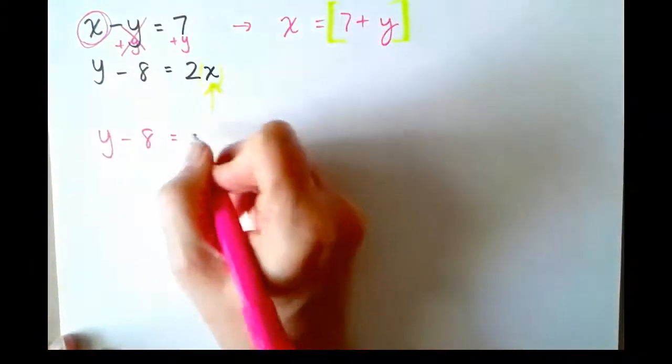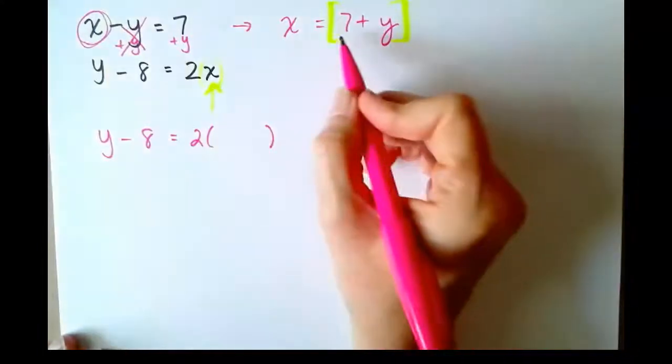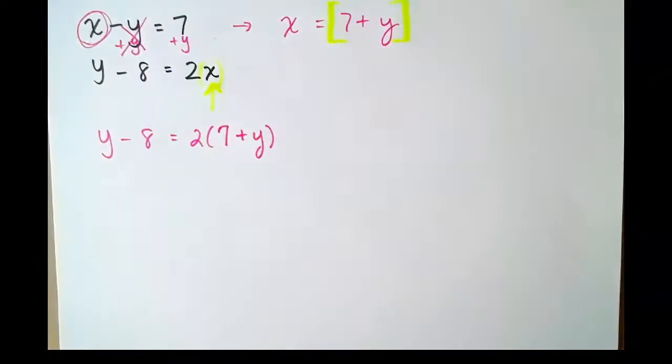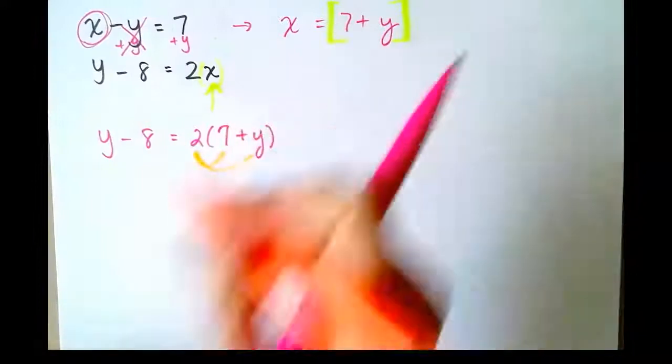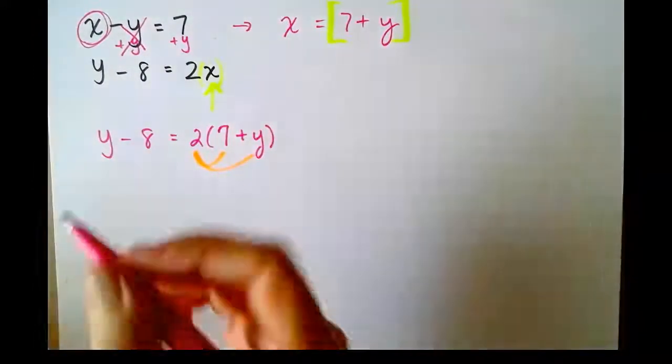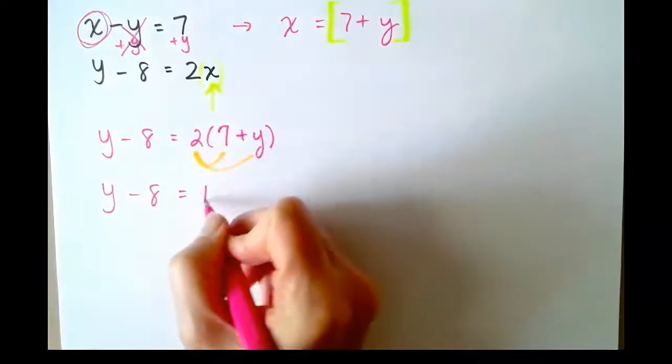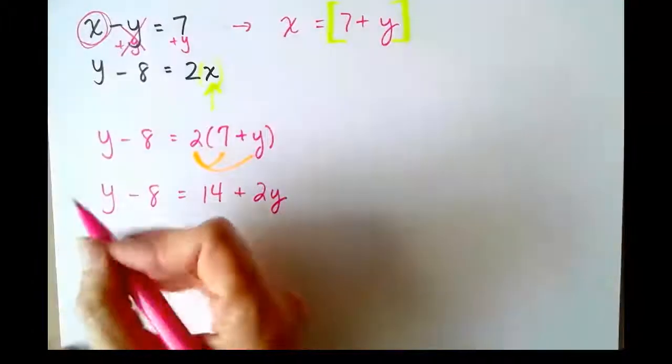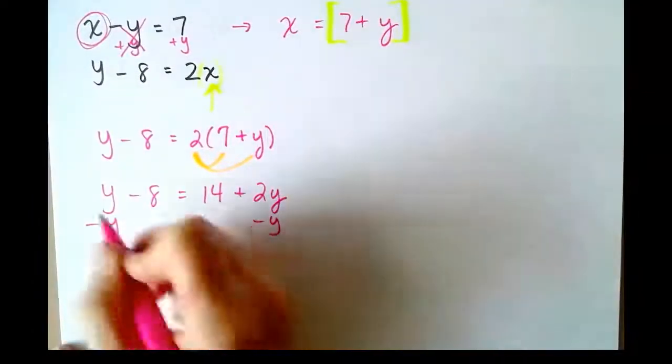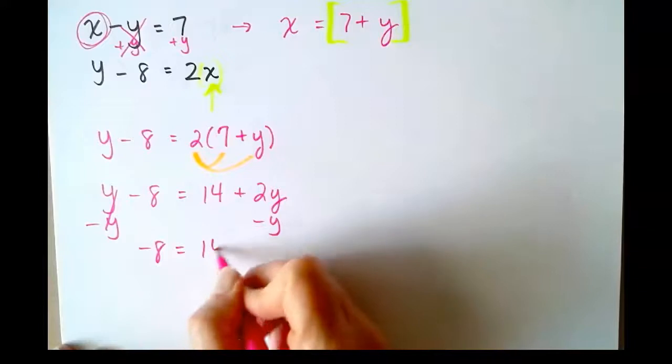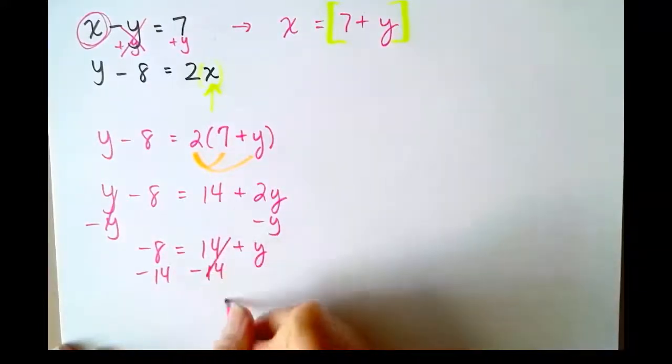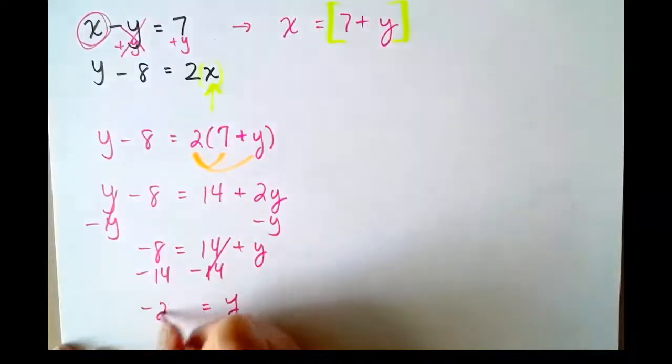y - 8 = 2 times x. x is 7 + y. So now we've got a simple equation to solve. The first thing we need to do is use the distributive property there on the right. y - 8 = 14 + 2y. Solve this one. -y, -y. -8 = 14 + y. -14, -14. y = -22.